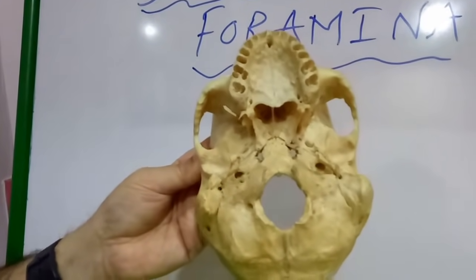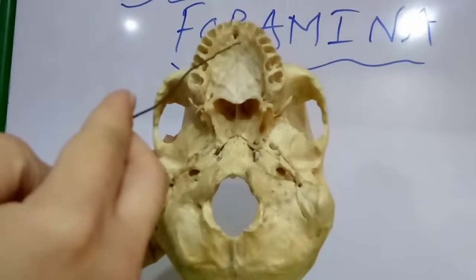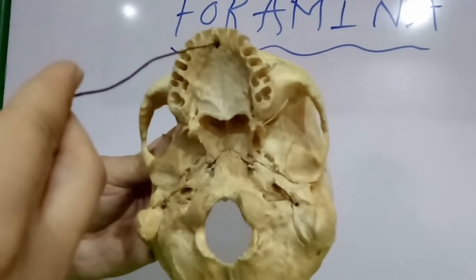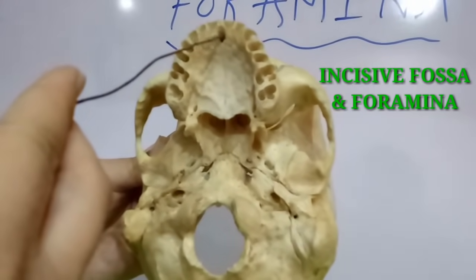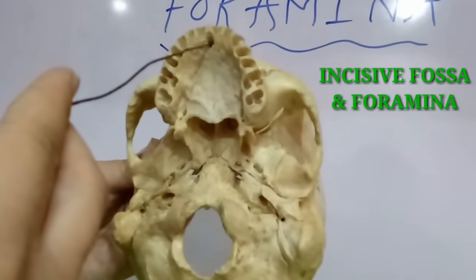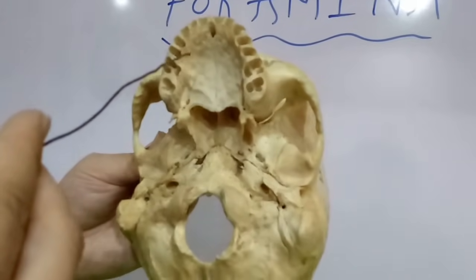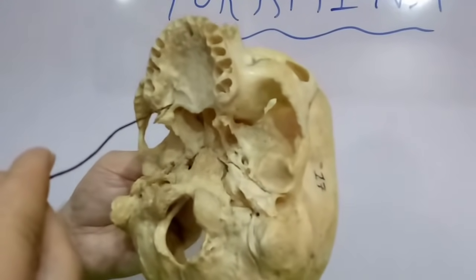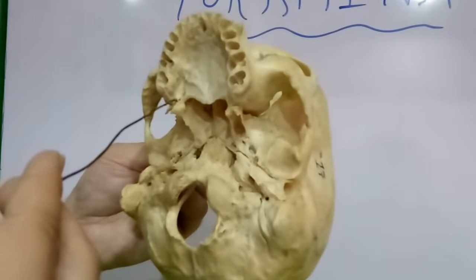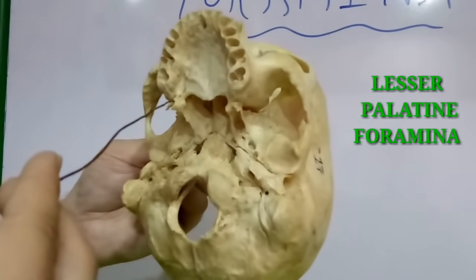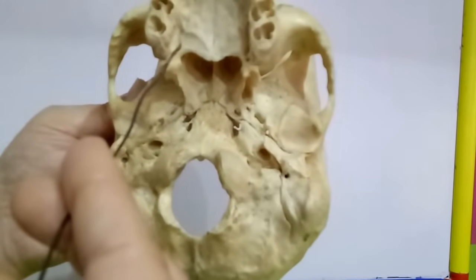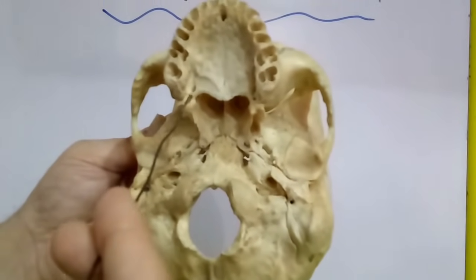On the basal view of the skull we can also see other foramina. In the hard palate, anteriorly there is the incisive fossa with incisive foramina, through which the terminal part of the greater palatine vessels and the nasopalatine nerve pass. Posterolaterally is the greater palatine foramen, from which emerge the greater palatine vessels and nerve. Behind it are smaller multiple foramina — the lesser palatine foramina — through which pass the lesser palatine nerves and vessels.